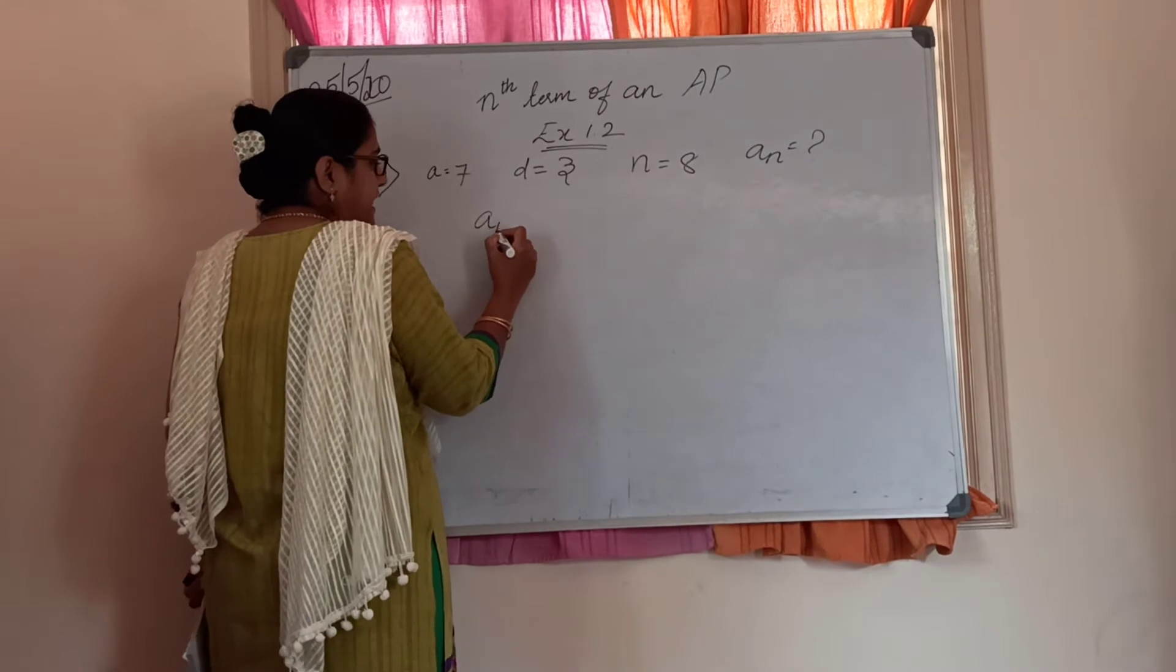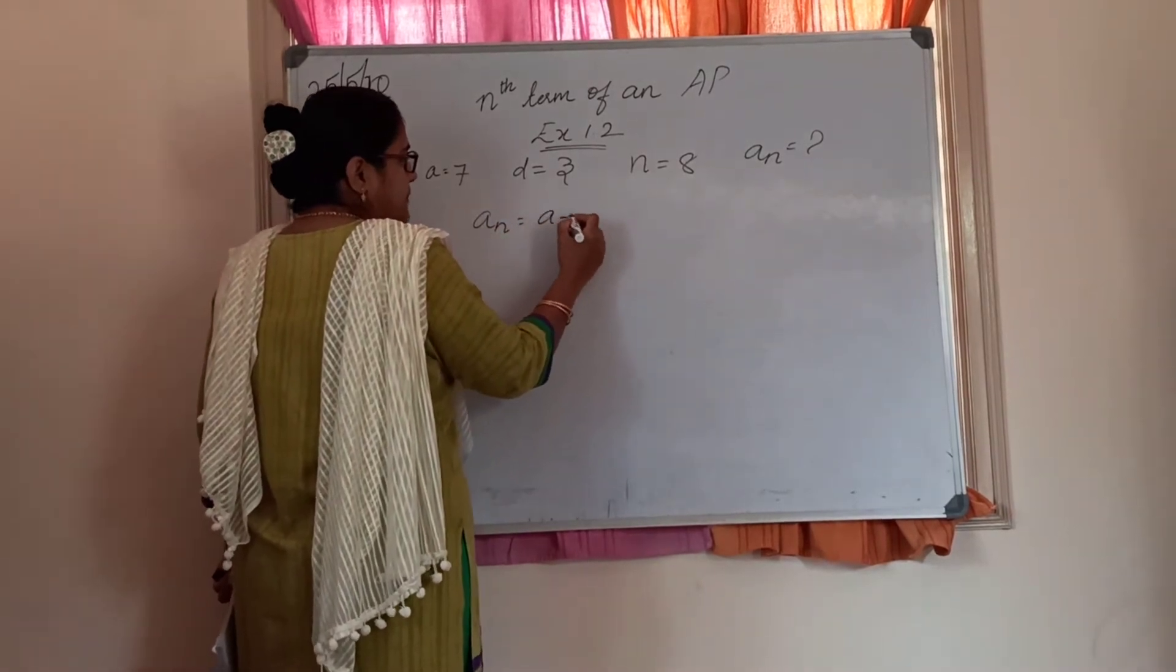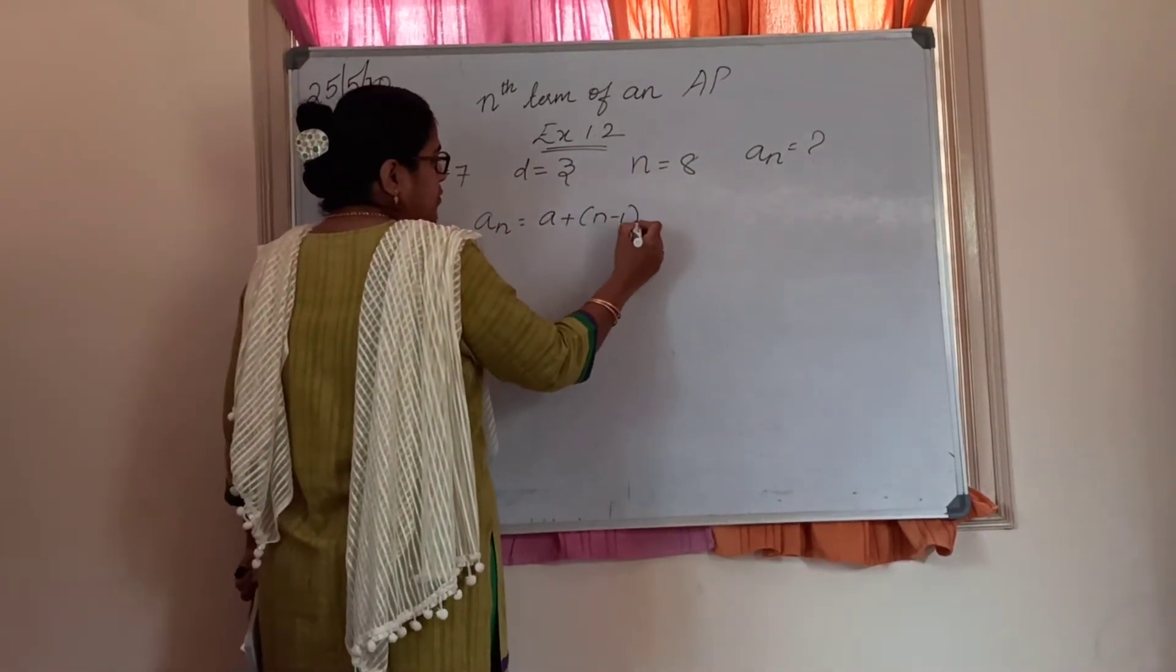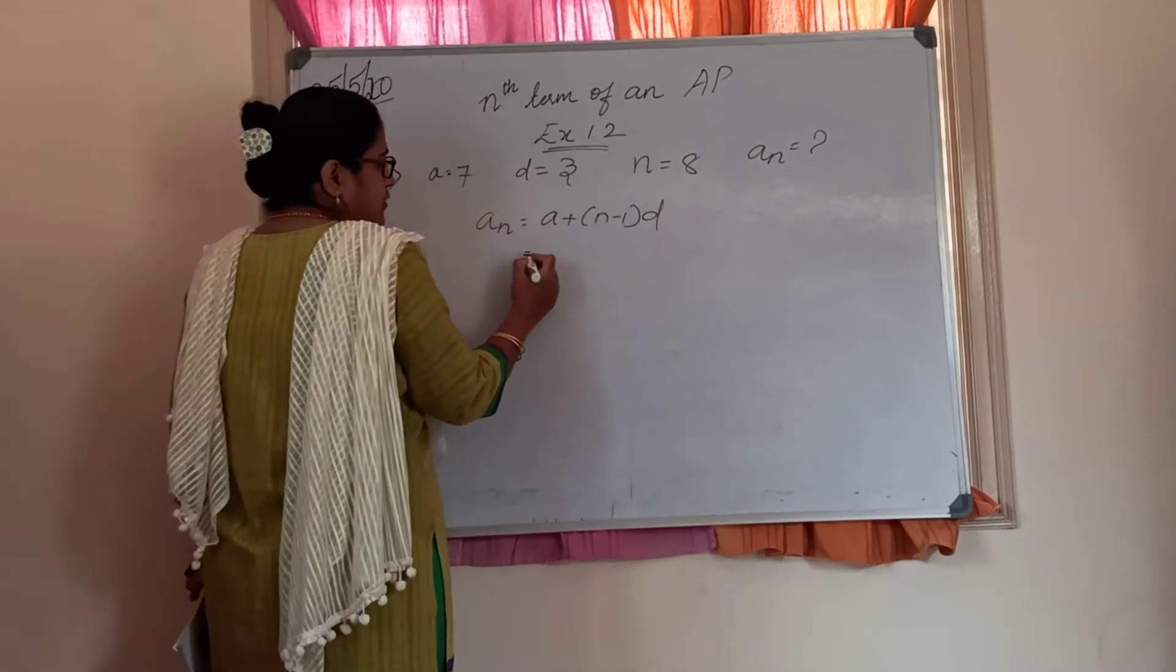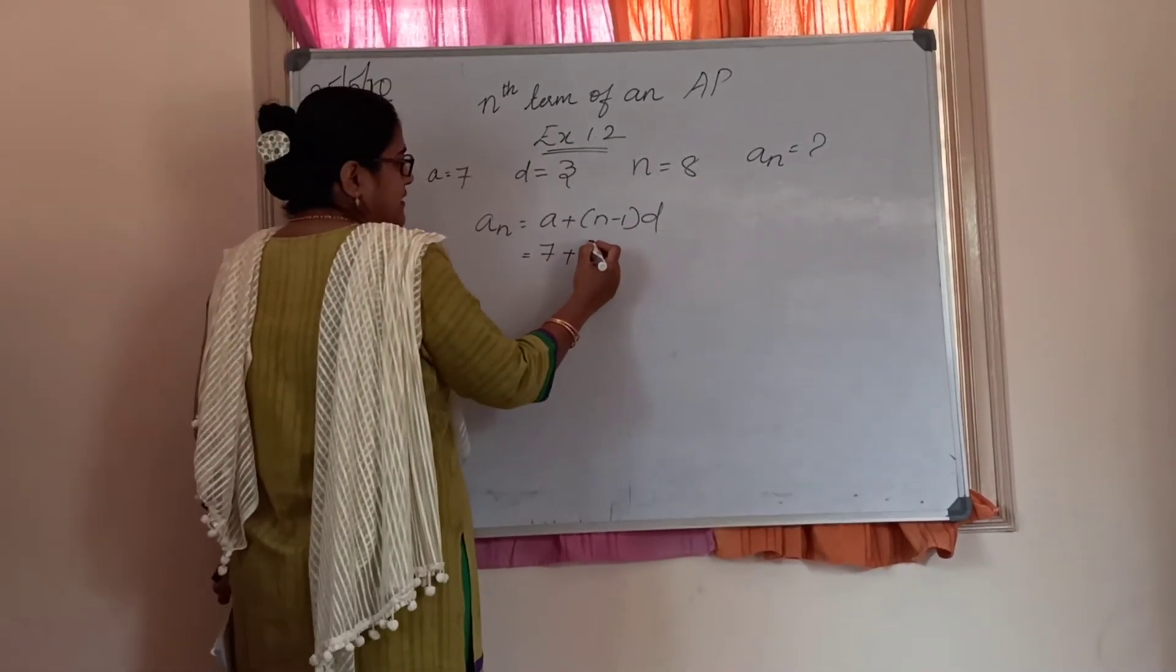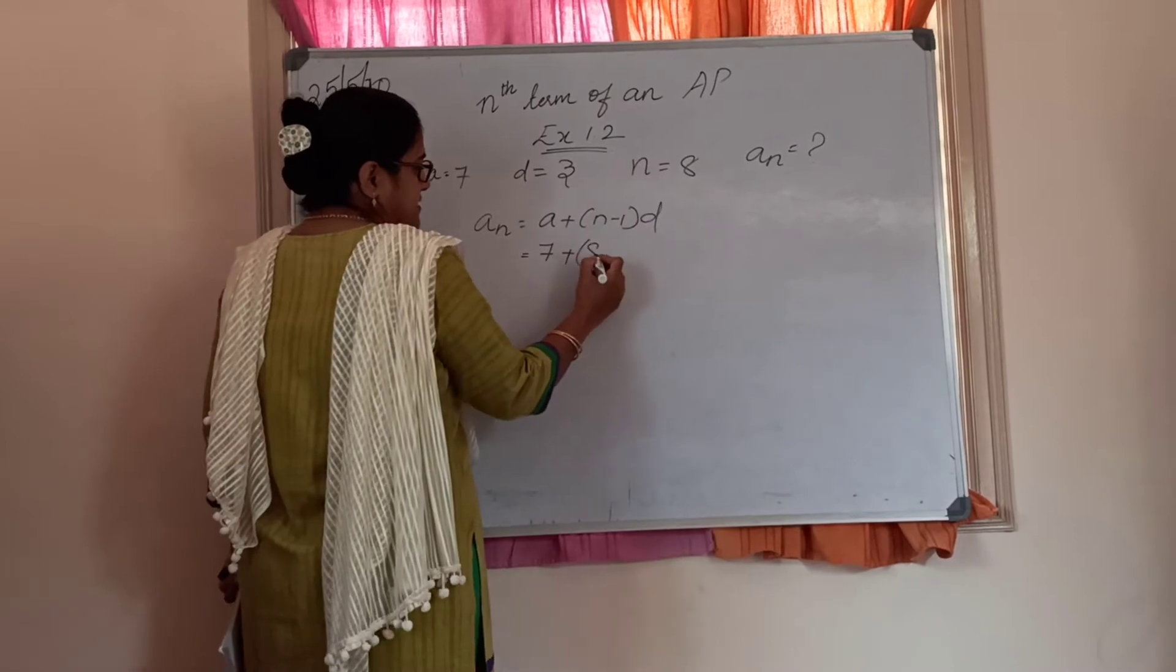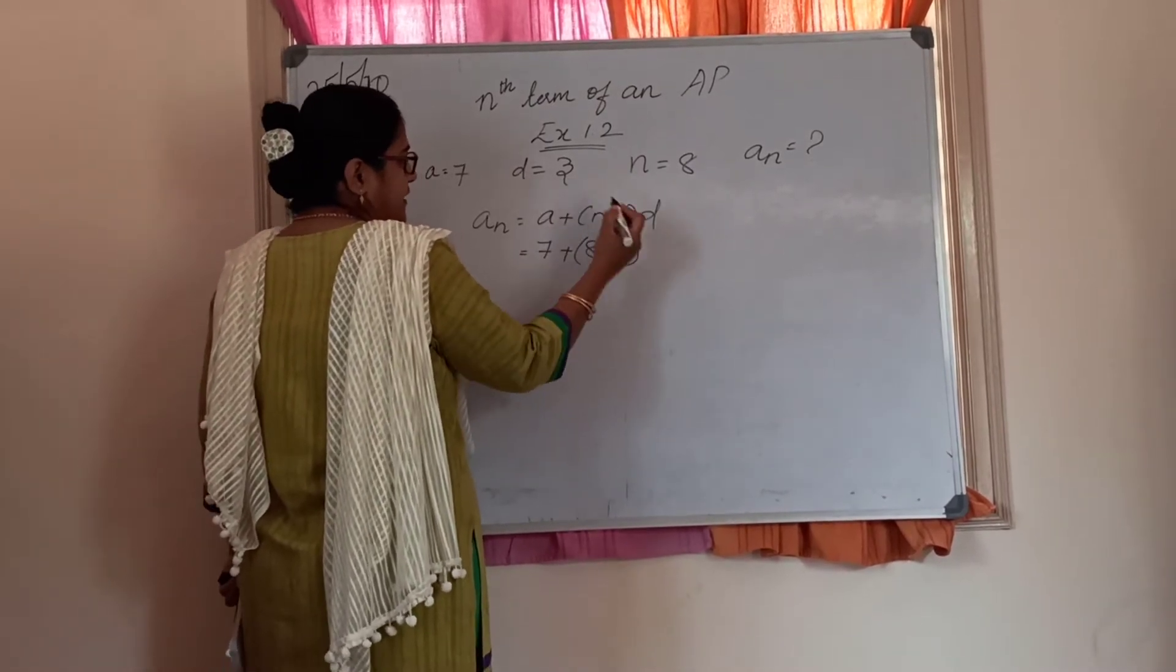So we obviously use that formula: AN is equal to A plus N minus 1 into D. What is A? It is 7 plus N is 8 minus 1 into D.